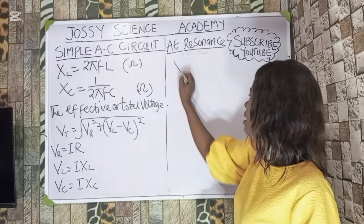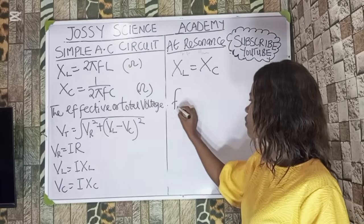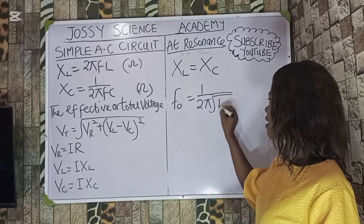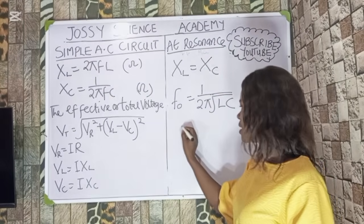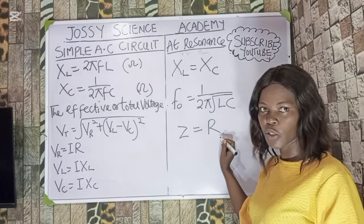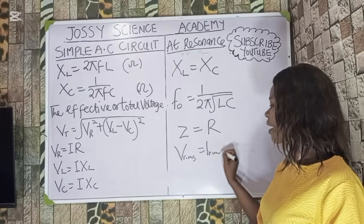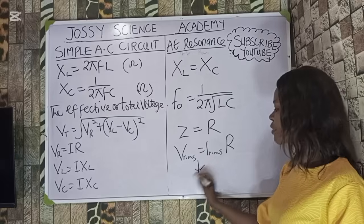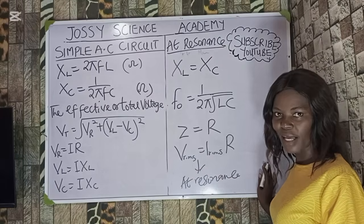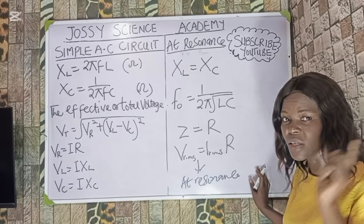At resonance, X_L equals X_C. The resonance frequency F₀ equals 1 over (2π·root of LC). At this resonance frequency, the impedance Z equals R, so V_RMS equals I_RMS multiplied by R. This simplified relationship only holds at resonance.